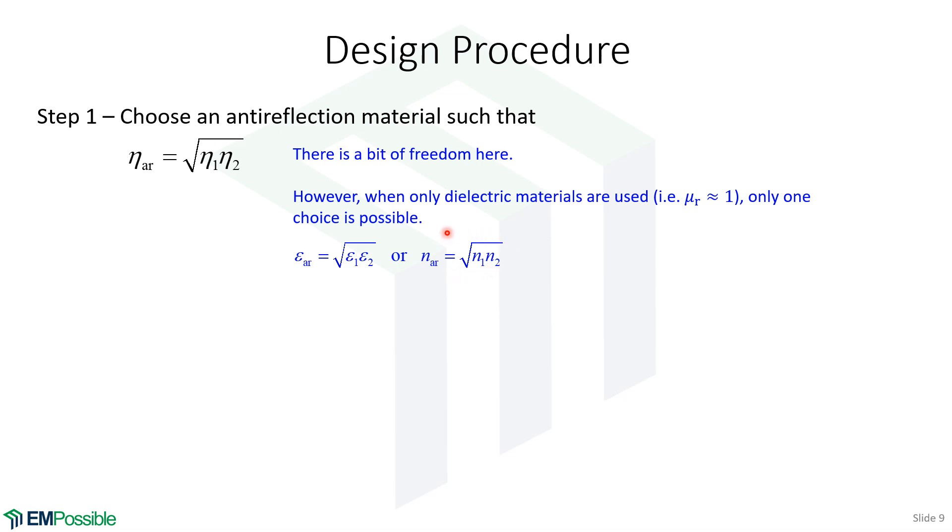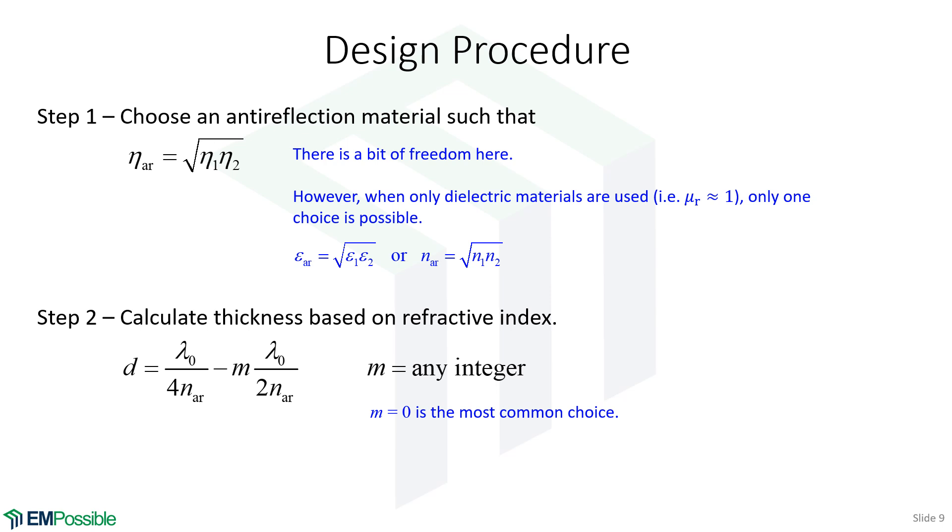So this is probably what you'll see if you Google anti-reflection layer, that we calculate refractive index as the geometric mean. Given the refractive index, then you can calculate the thickness of the anti-reflection layer. And M equals 0 is the most common choice. And you'll see why here in just a minute. So that will be it. You calculate the refractive index of the anti-reflection layer. Given that, you can calculate the thickness. And maybe you're just not able to make a quarter wavelength, but you can do three quarters of a wavelength. In which case, setting M to higher numbers is an option.